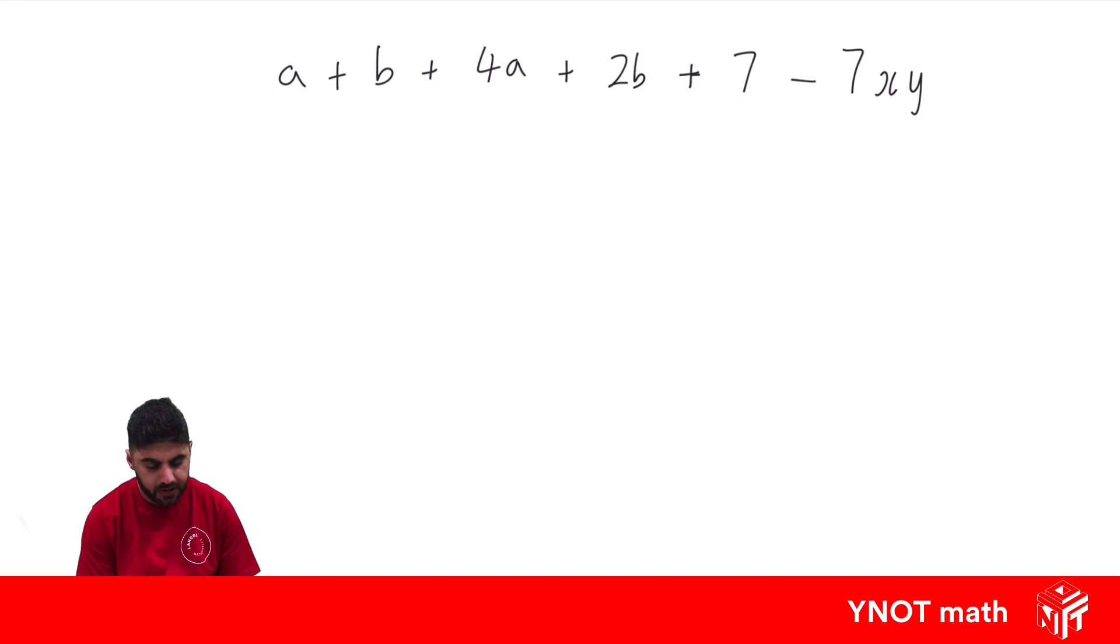Now, are any of them like terms, or what is a like term? Let's have a look. Well, a and 4a are like terms. B and 2b are like terms. And they're like terms because it's all about the pronumeral. So they both have pronumeral a, and these both have pronumeral b, and they're the only matching pairs of like terms in that expression above.